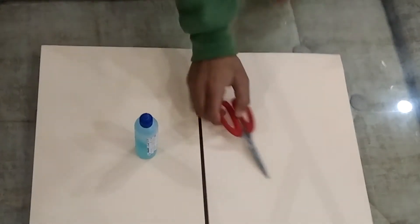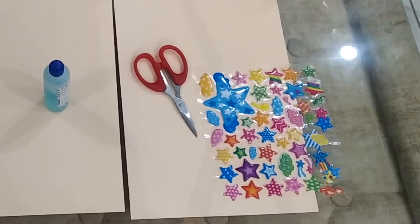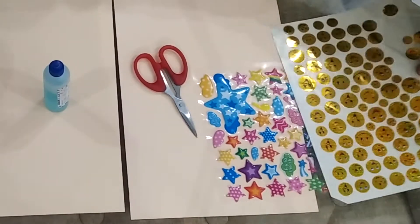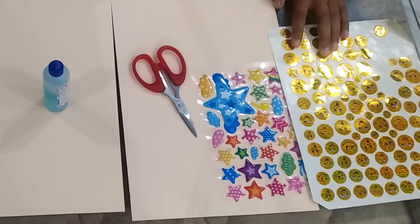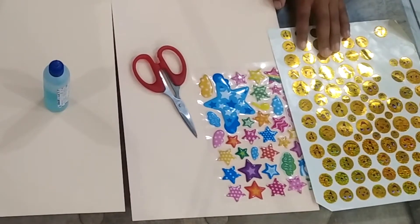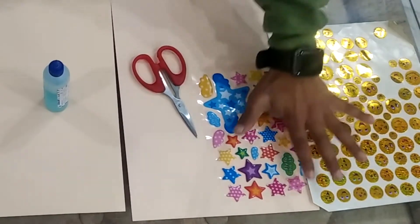We need two sheets, light color glue, scissors, and stars to decorate. You can decorate it with these or you can draw stars and smileys. So let's start making this bag.